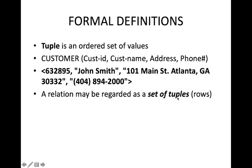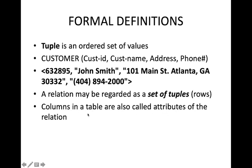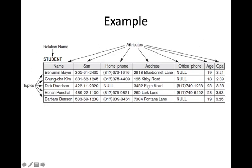A relation can be considered as a set of tuples or set of rows. Columns in a table are also called attributes of the relation — CustomerID is a column name which denotes an attribute name. This is an example of a Student relation, where Student is the name of the relation and the attributes are Name, SSN, HomePhone, Address, OfficePhone, Age, and CGPA. There are five tuples or five rows in this relation.